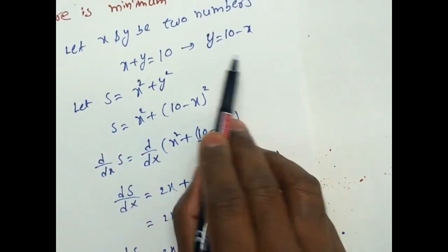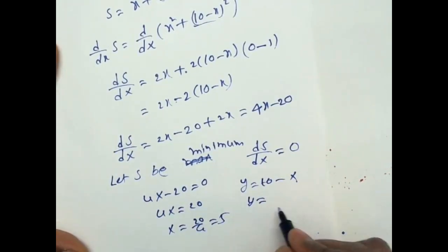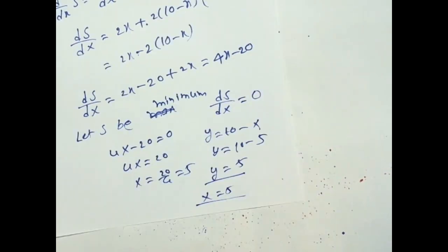Y equal to 10 minus X. Y equal to 10 minus 5. That equal to 5. Y value is 5, X value is 5. Thank you for watching my video.